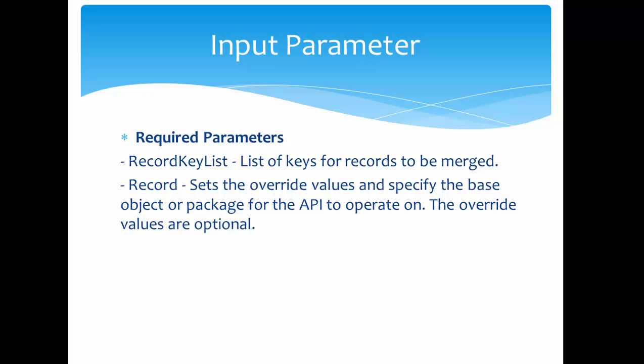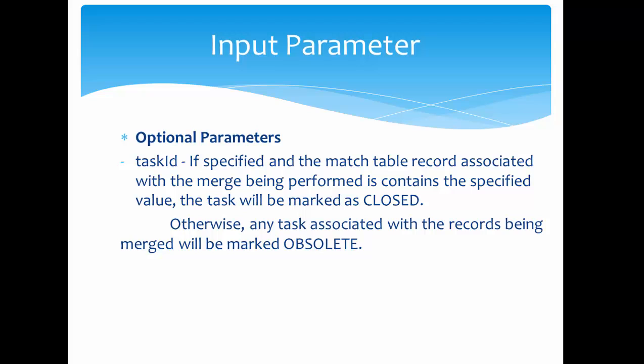The override values are optional. For example, suppose there are three records: the first is 'Mike Paul', the second is 'Michael Paul', and the third is again 'Mike Paul'. If you want the final record to have the value 'Michael Paul', you can pass that value as the Record override — but it is optional.